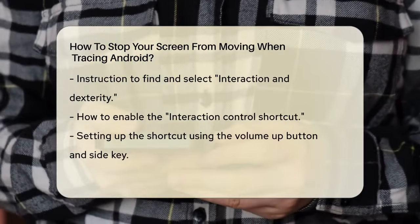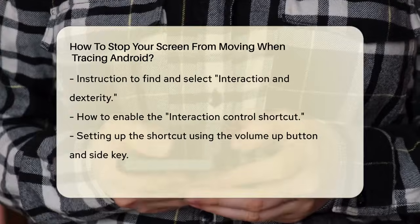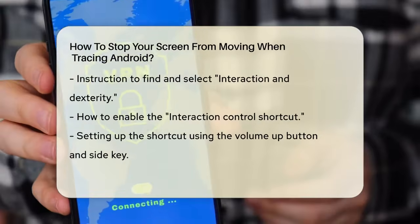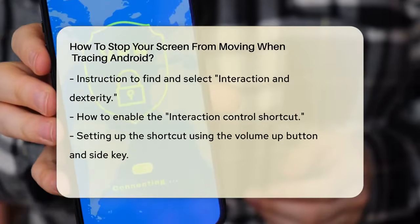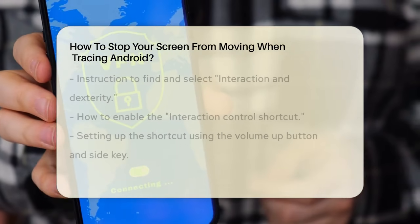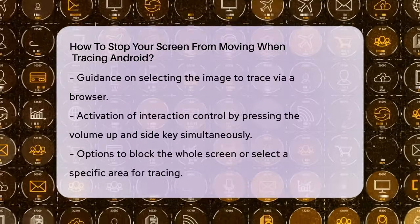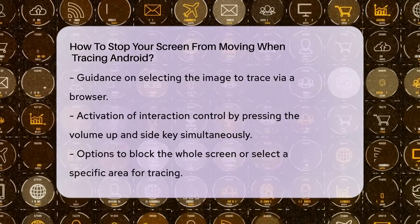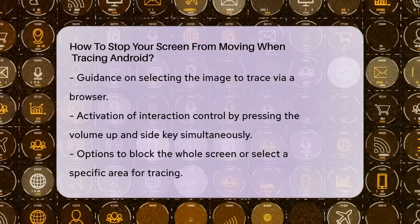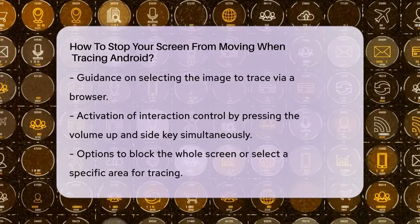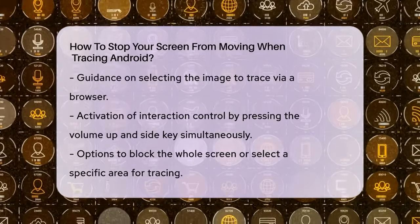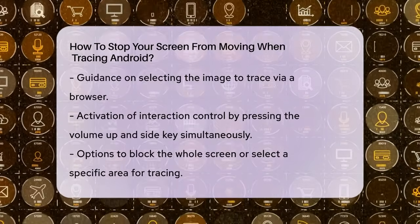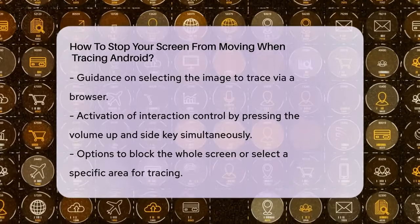Next, choose the image you want to trace. You can do this by opening your browser, finding the image, and displaying it on your screen. To activate the Interaction Control, press the Volume Up button and the Side key at the same time. You'll see a prompt asking if you want to block the whole screen or select a specific area. Choose the option that works best for you.